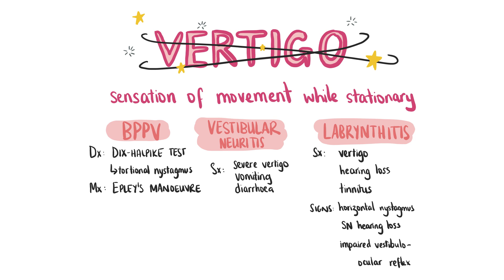Vestibular neuritis is another cause of vertigo and refers to inflammation of the vestibulocochlear nerve. Patients will present with acute onset of severe vertigo, vomiting and diarrhoea without any hearing loss or tinnitus. It is self-resolving, although bed rest may be necessary, and it would be sensible for the patient to avoid driving, especially when dizzy.